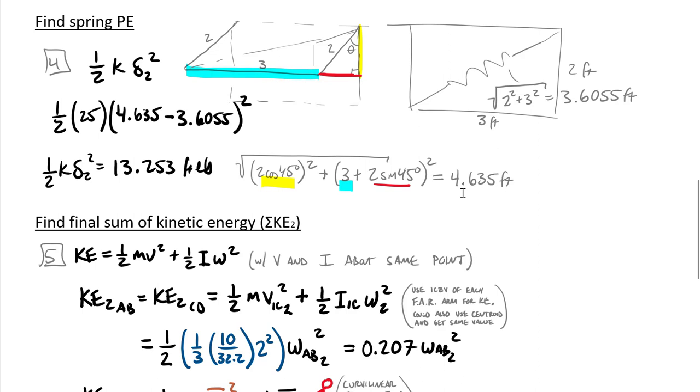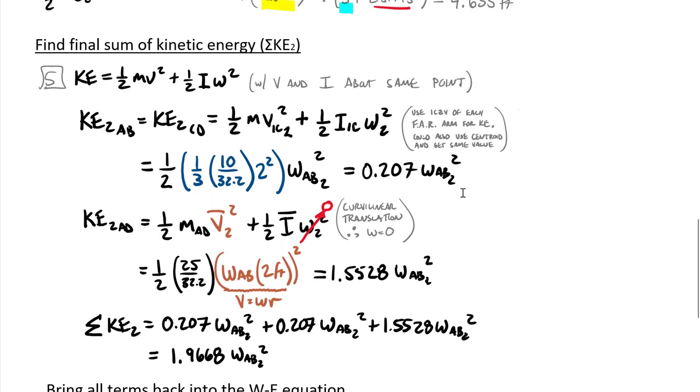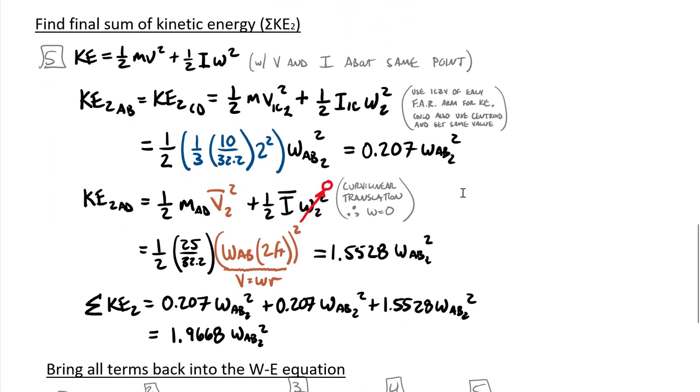Down to my last term in my work-energy equation, I have my kinetic energy. Keeping in mind the kinetic energy has two different terms: a translational piece as well as a rotational. We can either compute these about the centroid or about the ICZV. In this case, my two fixed-axis rotation arms, the ICZV is at the point of fixed-axis rotation.